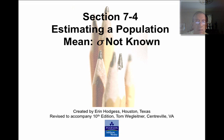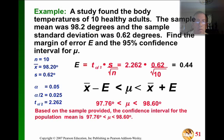A couple of new points in this and a couple of things you've already worked on. Let's take a look at a study of temperatures of 10 healthy adults. The sample mean was 98.2 and the sample standard deviation was 0.62. Let's find the margin of error and then the 95% confidence interval.